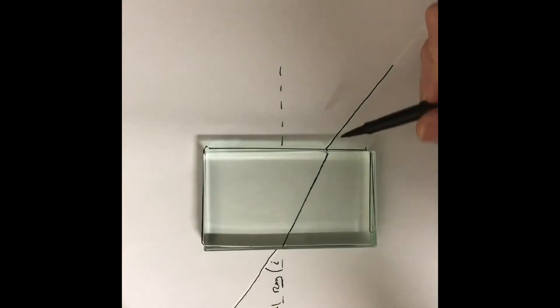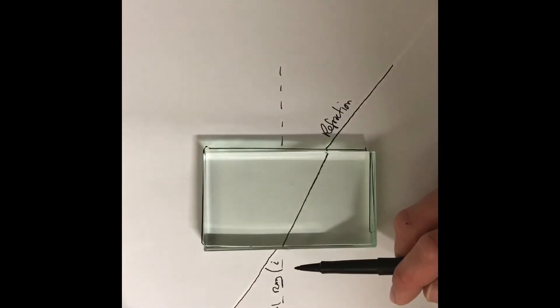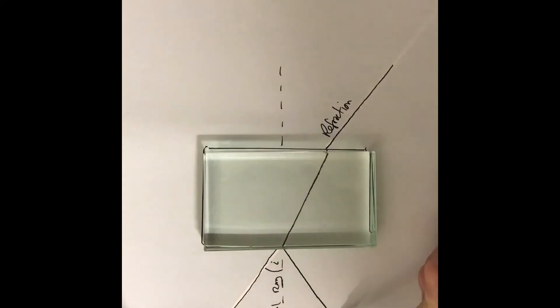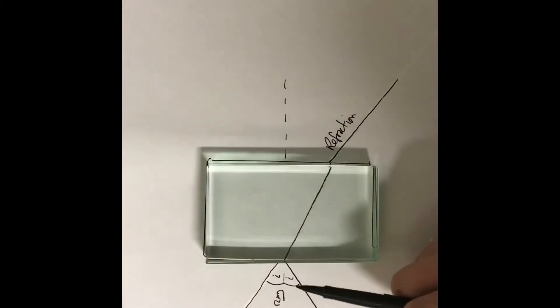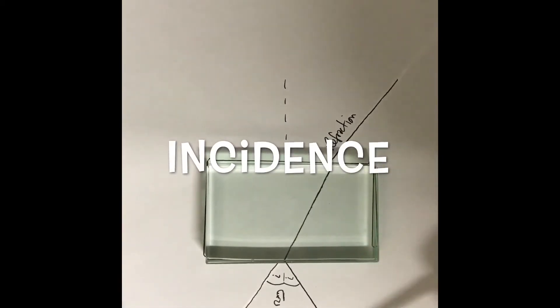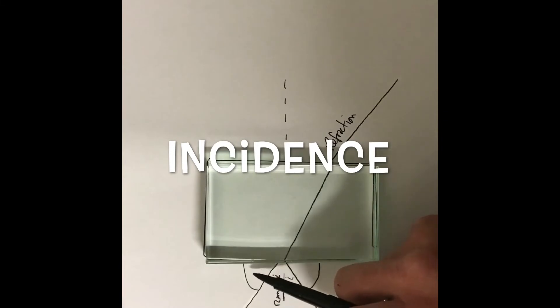So we call this ray here the refracted ray. That's refraction. Now you'll also notice if we really did turn the lights off that we'd also get a reflected ray here, and these angles should equal the same because this reflection is a specular reflection. These angles should also be the same.